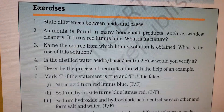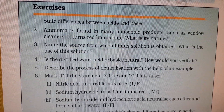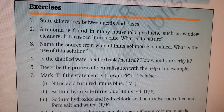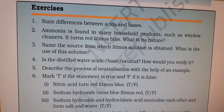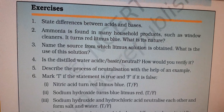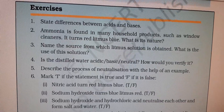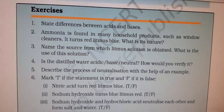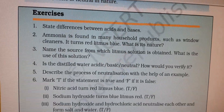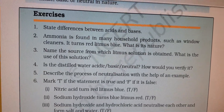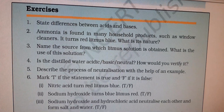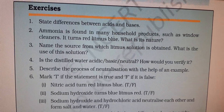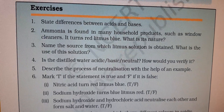Make two columns and write acid and bases. First point: acids are sour in taste, bases are bitter in taste. Acids are non-soapy to touch, bases are soapy to touch. Acid turns blue litmus red, bases turn red litmus blue. Phenolphthalein remains colorless with acid and turns light pink with base. When turmeric is added to acid, color remains the same; when added to base, color turns reddish brown. Write minimum 5 to 6 differences.